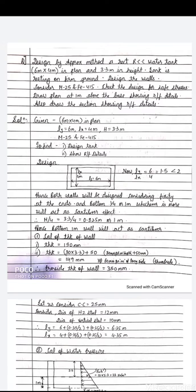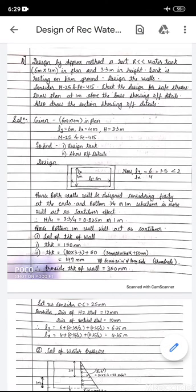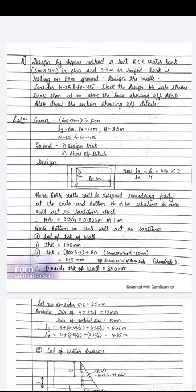If ly/lx is less than two, the walls are designed as a continuous slab — the walls of the water tank are designed as continuous horizontal slabs. If it is greater than two, the long walls are designed as vertical cantilevers and the short walls are designed as continuous slabs. Since our ratio is less than two, both walls will be designed considering fixity at the ends and bottom.